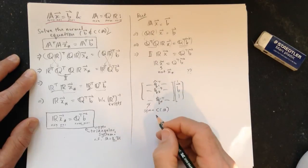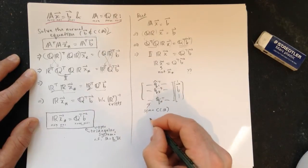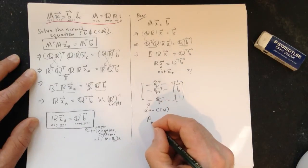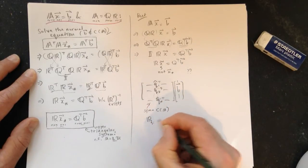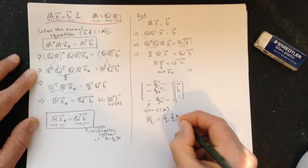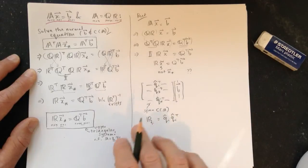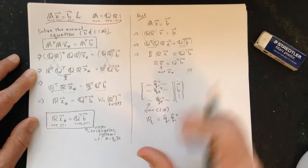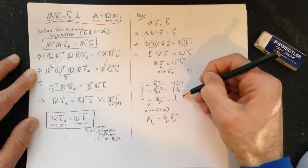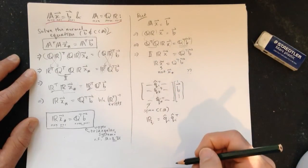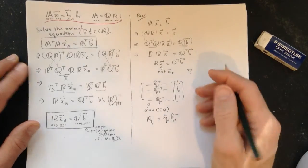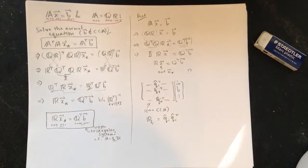So these guys span the column space of A, and if you remember, the projection matrix, say, onto one of these vectors, let's call it Q sub I, is Q sub I, and then the transpose. So this is a projection matrix. So this guy times any vector projects it onto that direction. So this is part of it. We're taking the piece of B that lives in the column space of A.